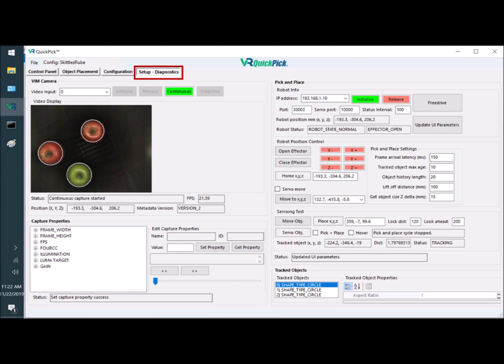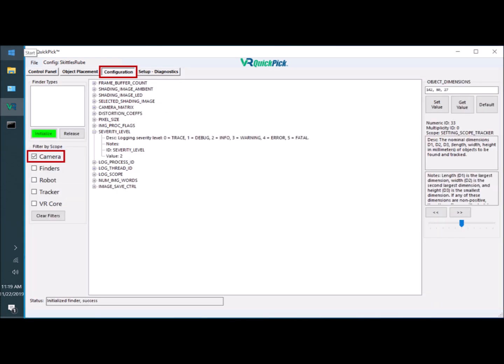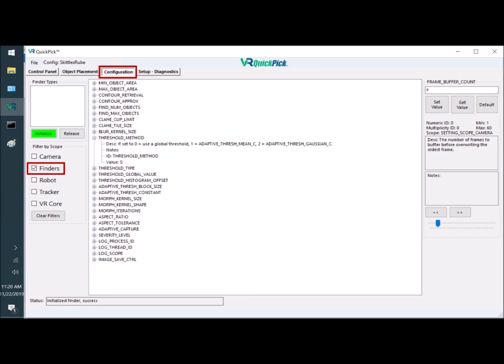On the Setup Diagnostic screen, you see the settings for object detection, pick lift-off height, and end effector controls. On the Camera Configuration screen, you have a high degree of control over image capture. On the Finders Configuration page, you adjust parameters that the Object Detection Finder will use to locate objects of interest, such as threshold settings.